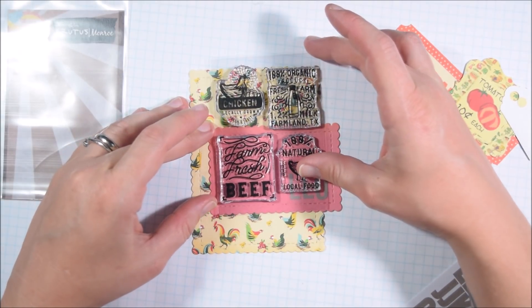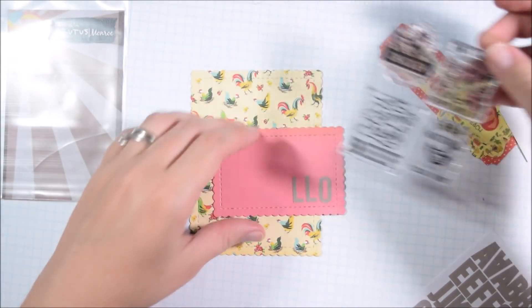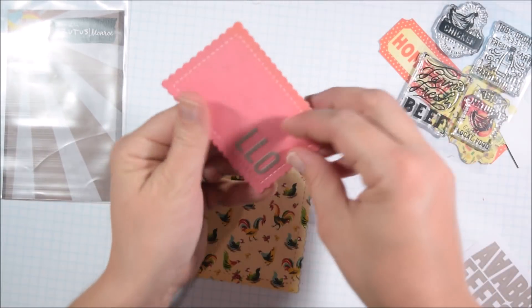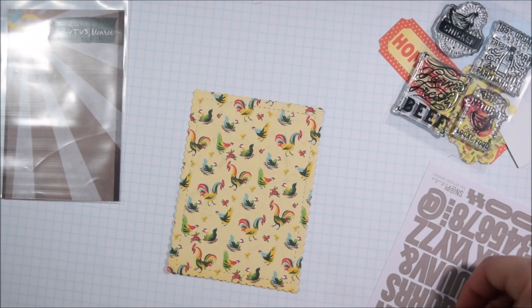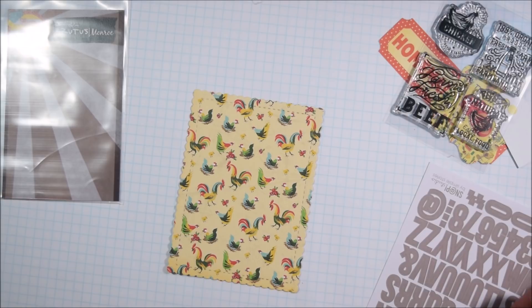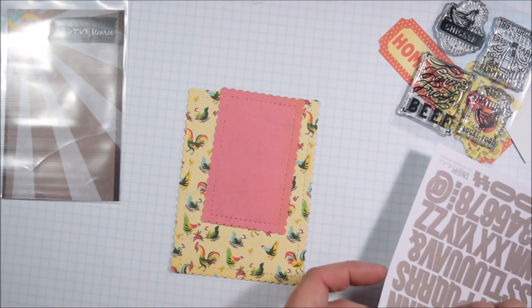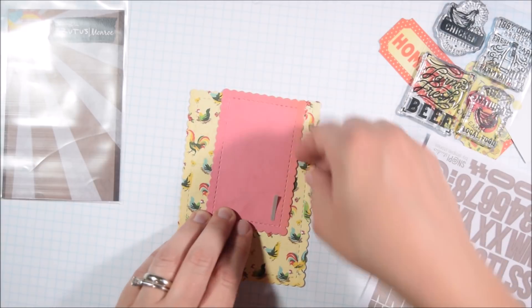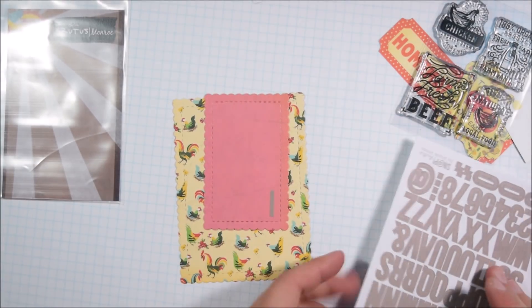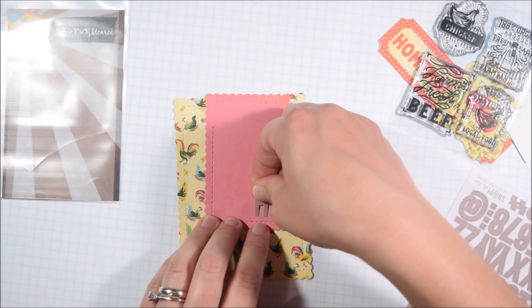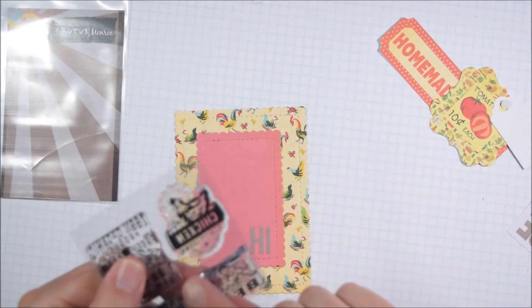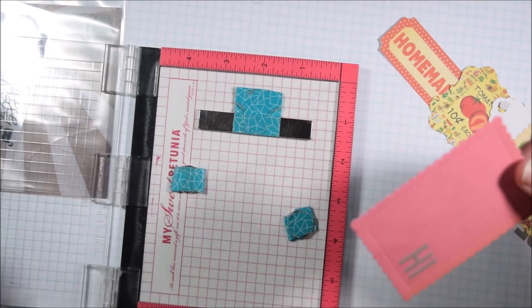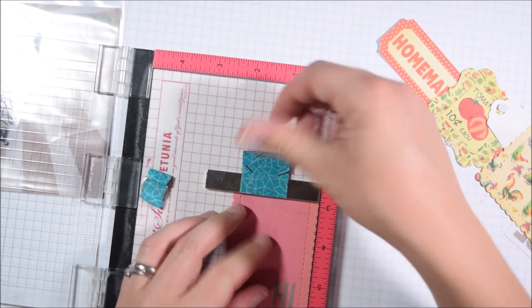So anyway, back to that sentiment set or stamp set. Again, they're not sentiments. It's like farm fresh beef. Like that's not a sentiment. So I was trying to figure out how best to use this. And I think it's because my style isn't super vintagey, so I wasn't quite sure. But I thought of using the letter stickers that come with it because this little mini collection also had the letter stickers. And I thought there must be a way I can combine them. So what I'm going to do is essentially stamp out the sentiment farm fresh high.